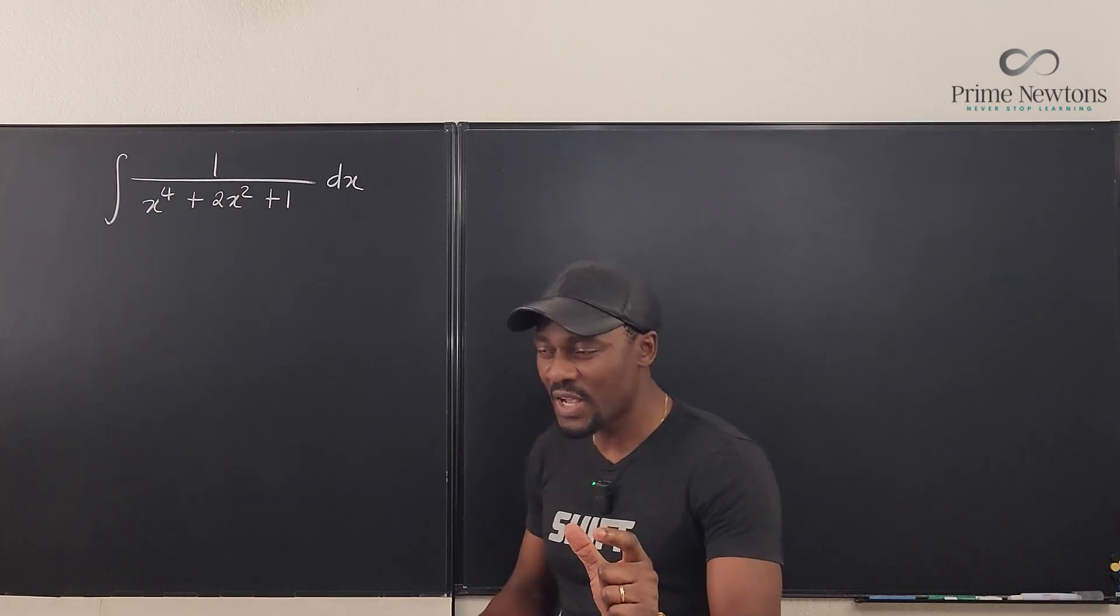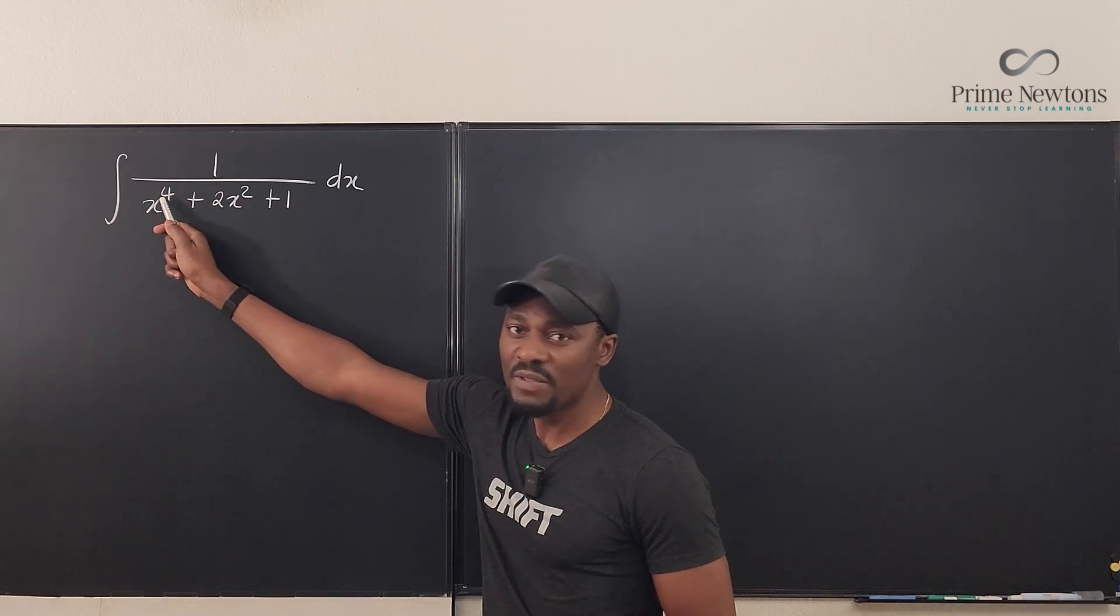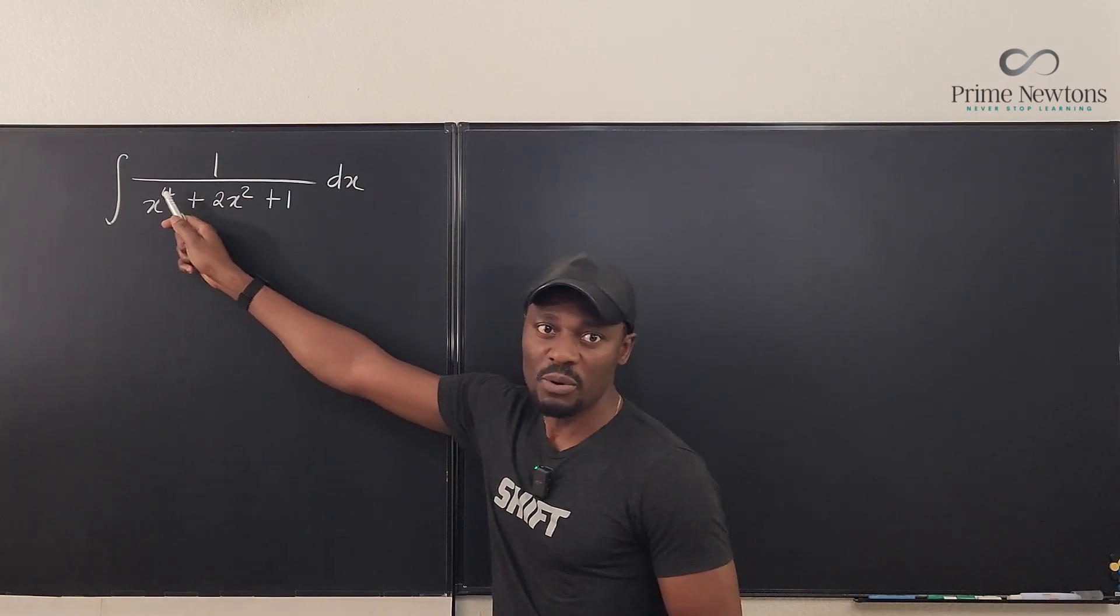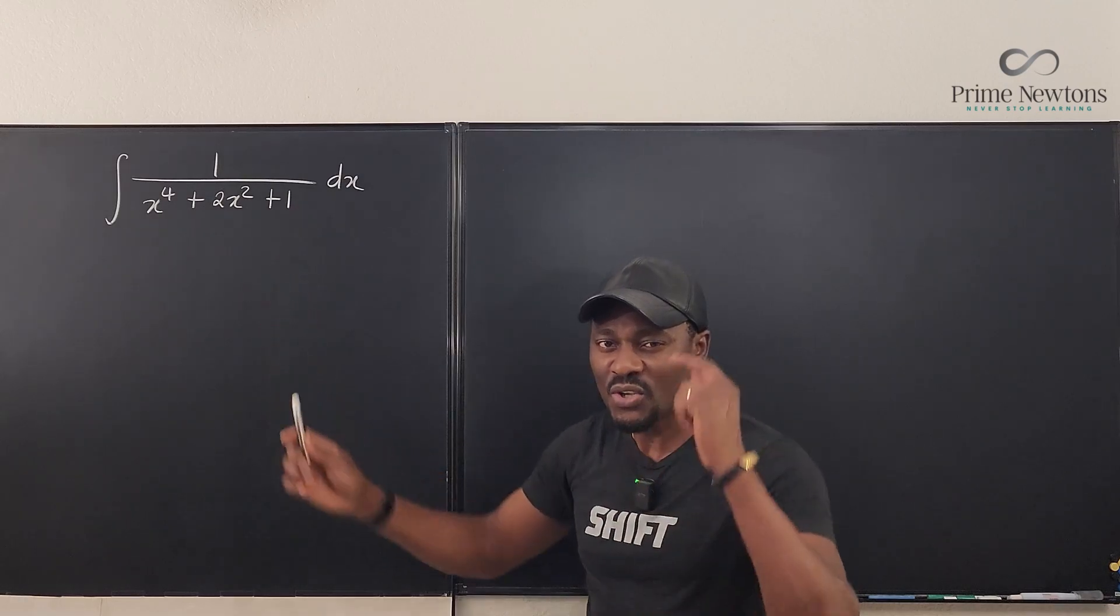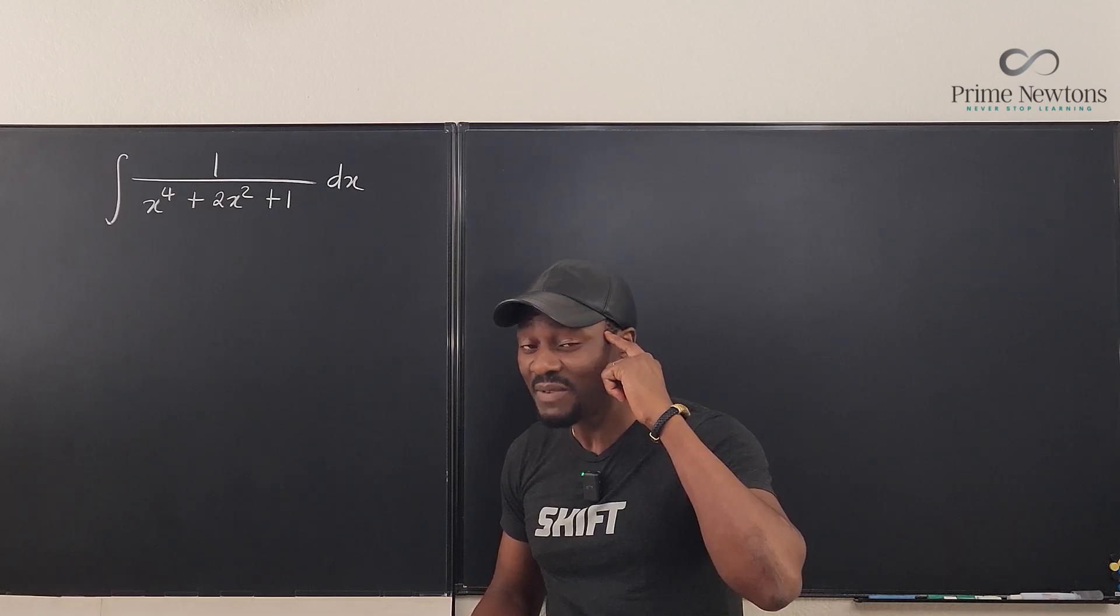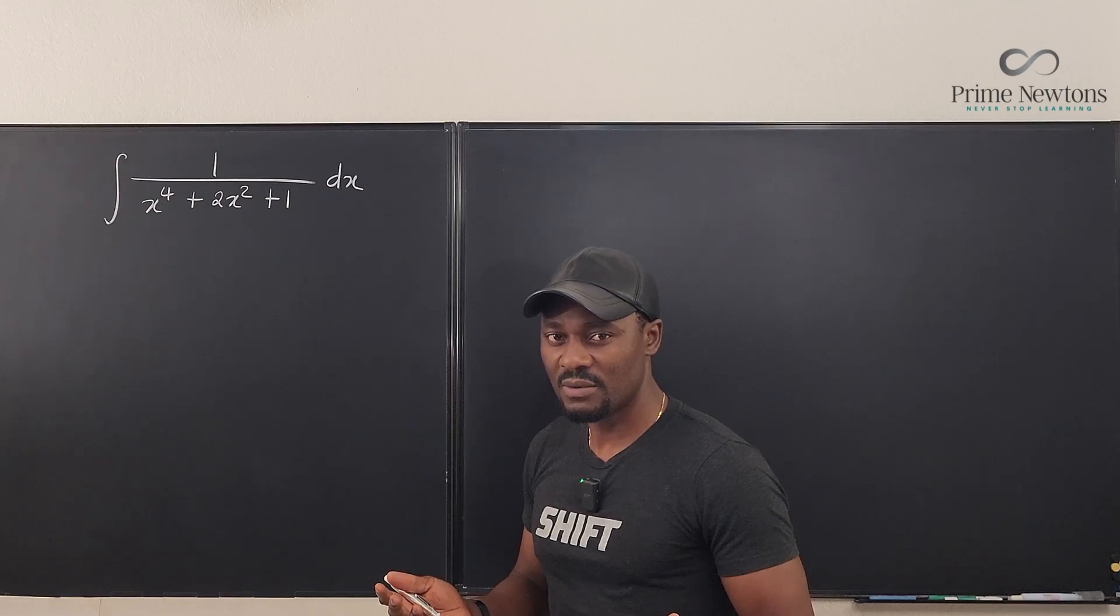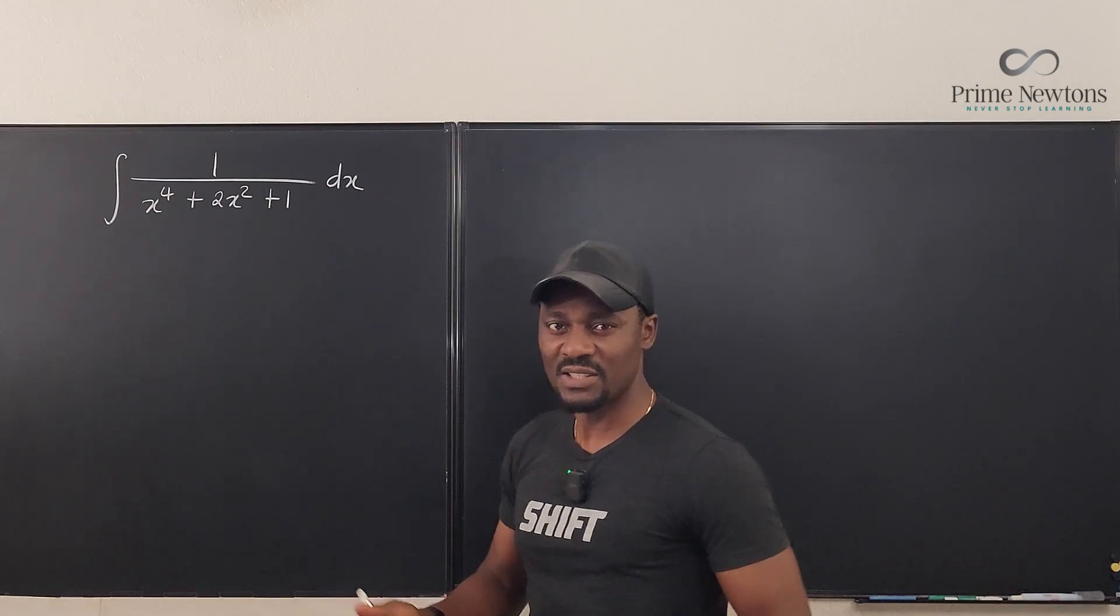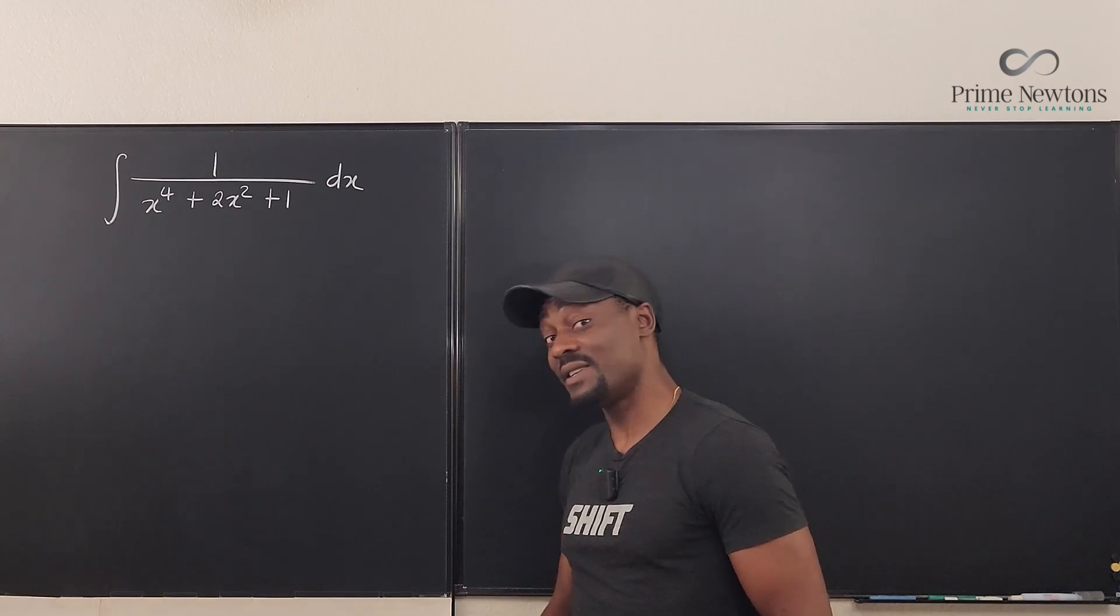But a closer look at this polynomial tells you that the degree of the first term is double the degree of the second term and there's a constant at the end. Start thinking of a perfect square, and if it's not a perfect square you may need to complete the squares. So what should you do? Well, I will try to factor this and see what comes out. Is it factorable? Well, we have to investigate. Let's get into the video.